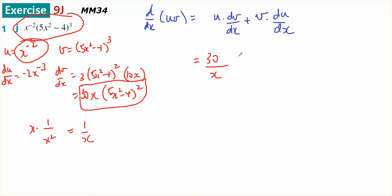So, 30 on x times 5x squared minus 4 squared plus this times this will be negative 2x to the negative 3, 5x squared minus 4 to the power of 3. I'm going to rewrite this as x to the negative 1.